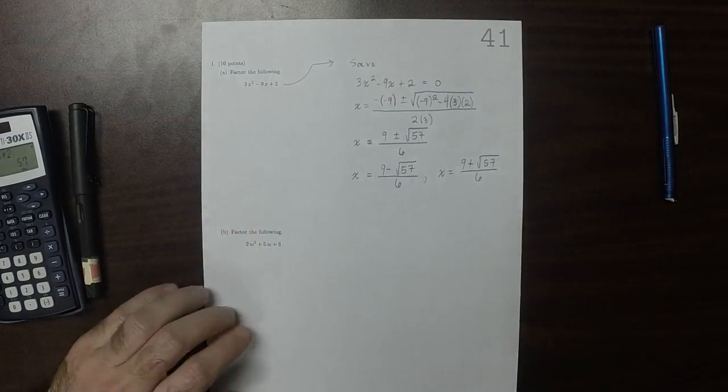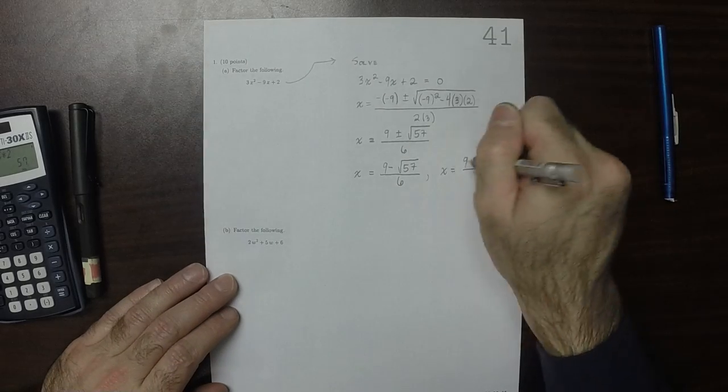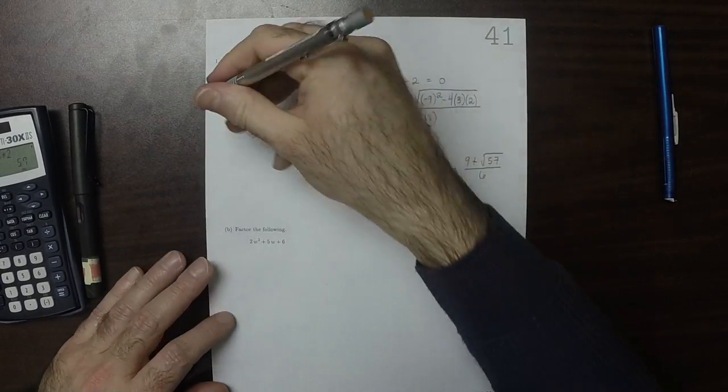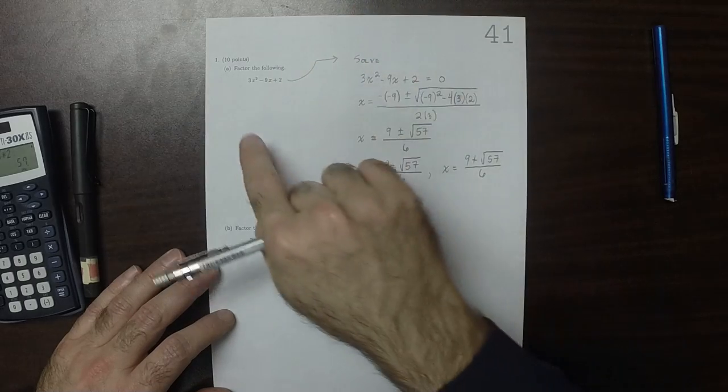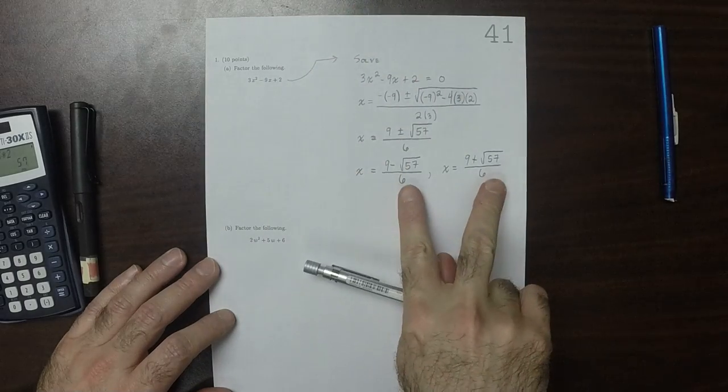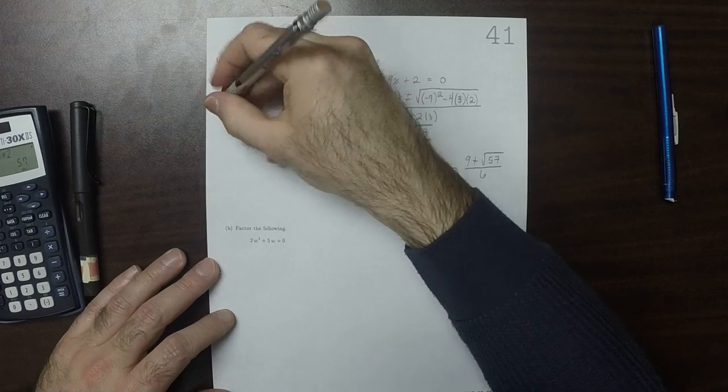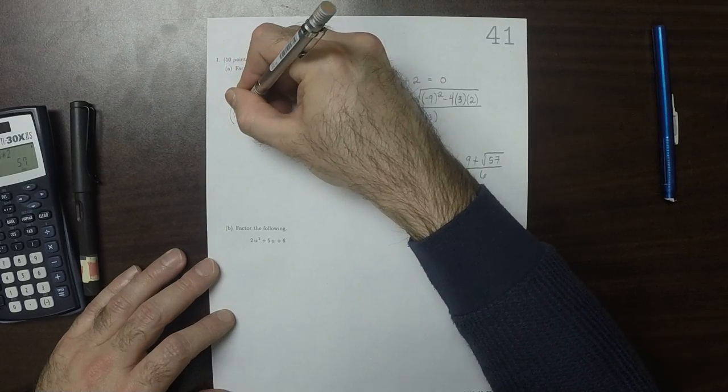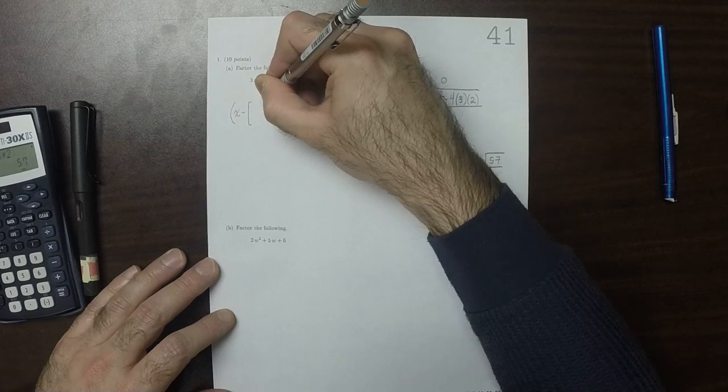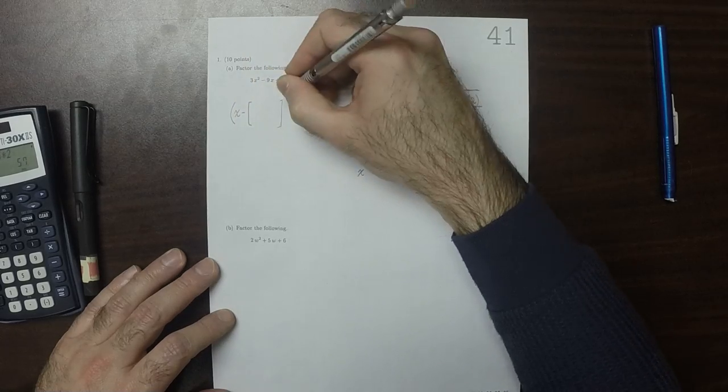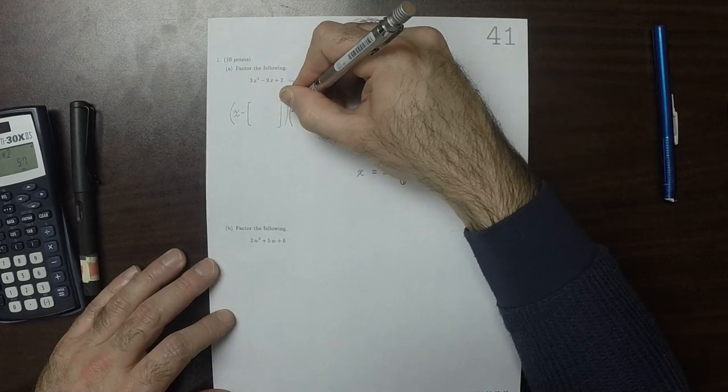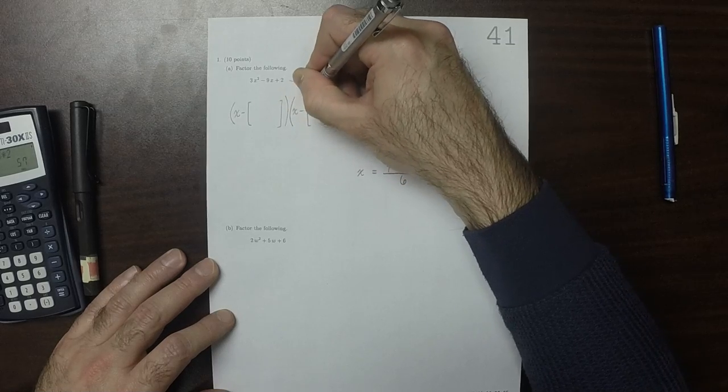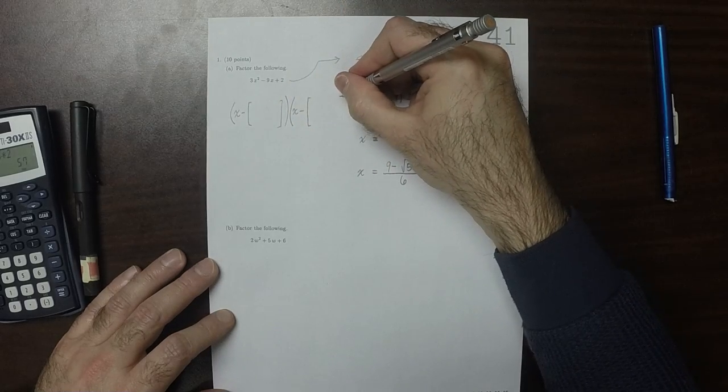So we have the two solutions to this equation. And the key insight is that these two solutions correspond to two factors to this. So x minus one solution multiplied by x minus the other solution is going to be the answer.